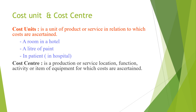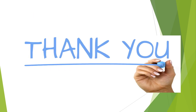A cost center can be a department as a whole for which costs are ascertained. It could be a department, a machine, or a project. For example, in a hotel, the reception could be one cost center, housekeeping could be another, and the restaurant could be another. If the restaurant is a cost center where costs are ascertained for the restaurant as a whole, it becomes a cost center. But when you ascertain a cost per dish, the dish becomes a cost unit. I hope this video has been helpful in understanding the basics of cost accounting. Thank you so much.